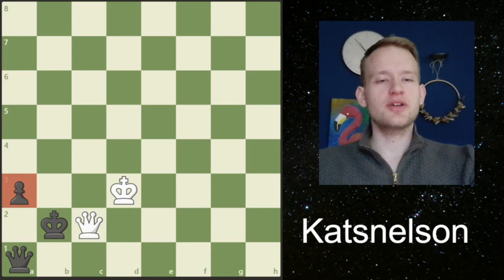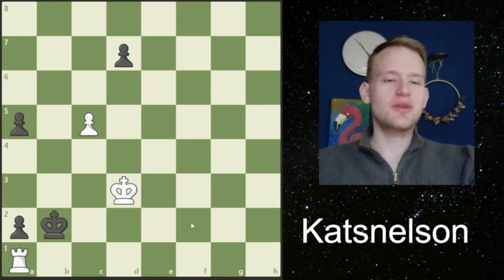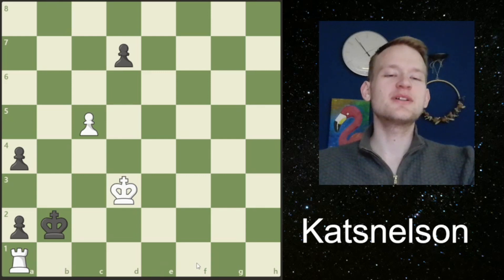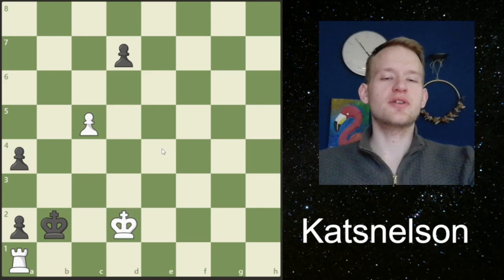Maybe one other line should be discussed. Because in this position, black doesn't have to take the rook immediately. He can also try to play a4 first. The thing is, having played the rook to a1, we don't want to move it away now. We can't push the pawn, so the only thing that's left is king to d2.